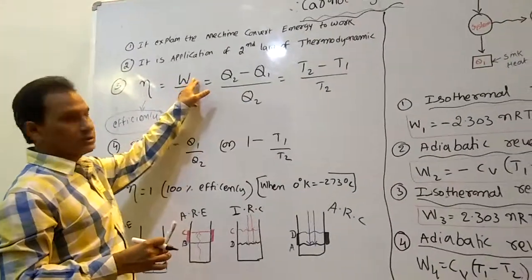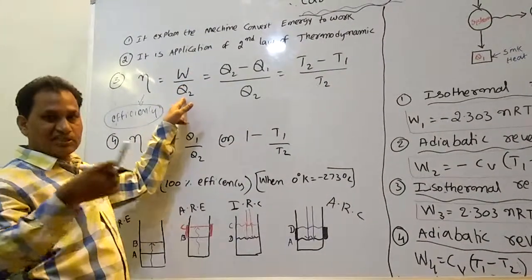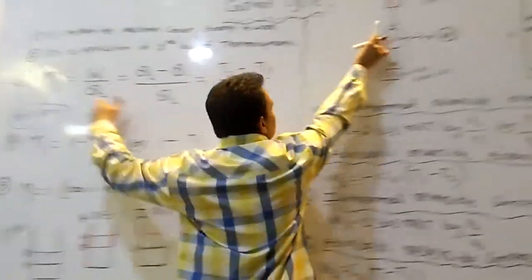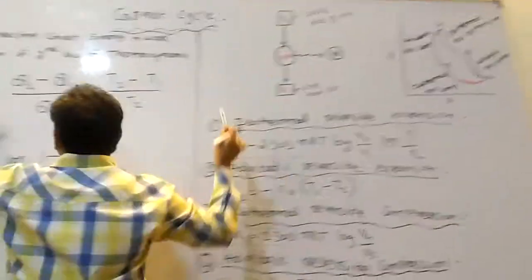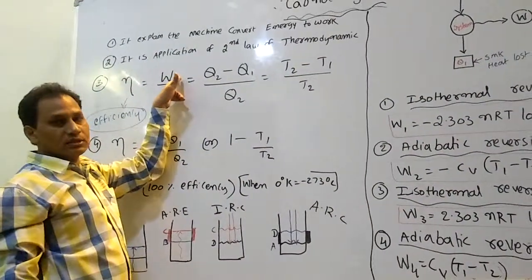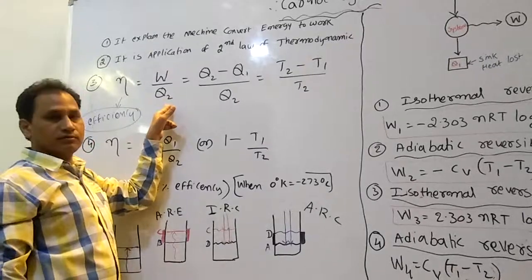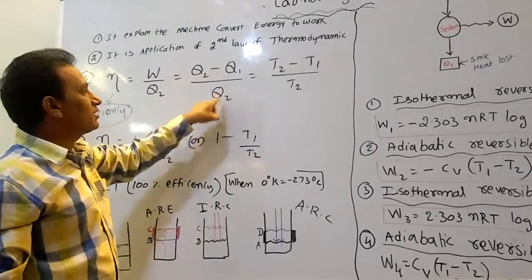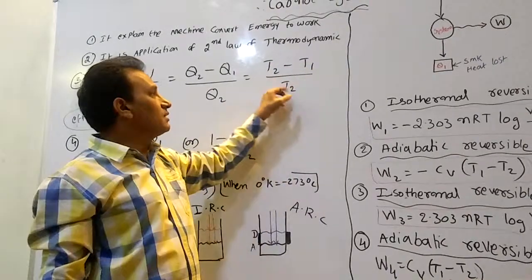Efficiency (nu) is equal to work done by the engine divided by heat absorbed. Q2 means heat absorbed from the source, W means work done by the system. That gives us: nu = (Q2 minus Q1) by Q2.